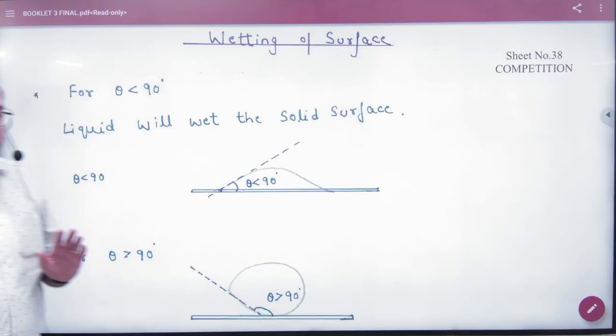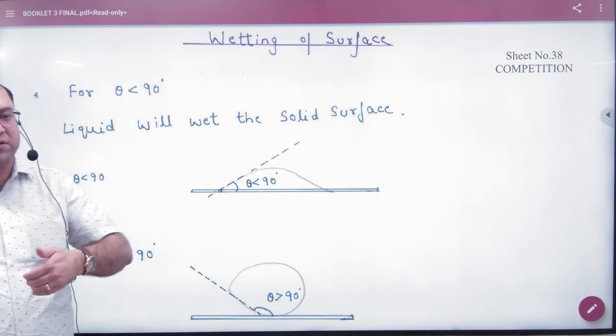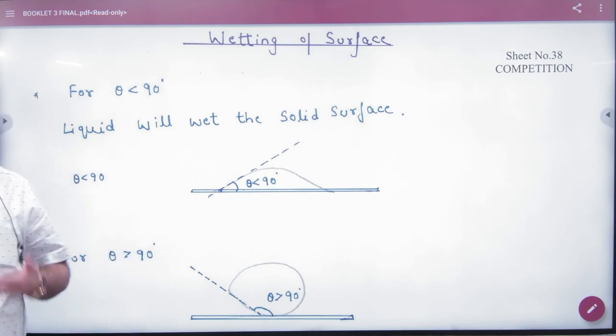In the wetting of a surface, it was said that when the container is wet, the liquid's angle of contact is less than 90. They are wet from the container, and the angle of contact is greater than 90, like mercury. They are not wet from the container.